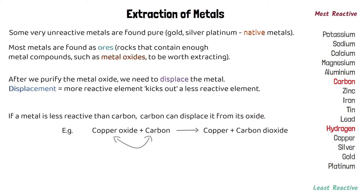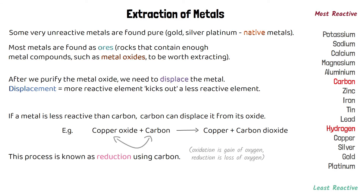This process is known as reduction using carbon. It's called reduction because while oxidation is the gain of oxygen, reduction is the loss of oxygen, and copper oxide has lost oxygen because it's been taken by the carbon.